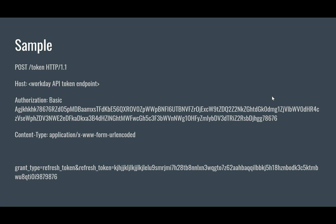Here's a sample: the host will be your Workday API token endpoint, and the authorization will be set to 'Basic' followed by a space and the Base64-encoded client ID and client secret. The Content-Type is application/x-www-form-urlencoded, the grant_type is refresh_token, and refresh_token is equal to the refresh token value obtained while registering your API client.